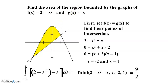Find the area of the region bounded by f(x) equals 2 minus x squared and g(x) equals x. First, set f(x) equal to g(x) to find the intersecting points: 2 minus x squared equals x, so x squared plus x minus 2 equals 0, giving x equals minus 2 and x equals 1. Lower limit is minus 2, upper limit is 1. Integrating 2 minus x squared minus x over those limits, we derive the final value of 9 upon 2 square units.